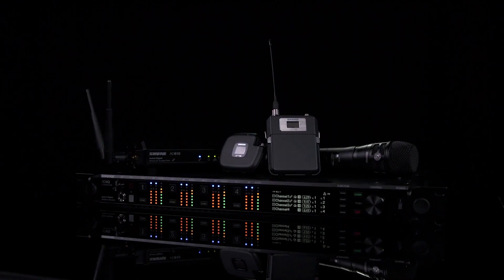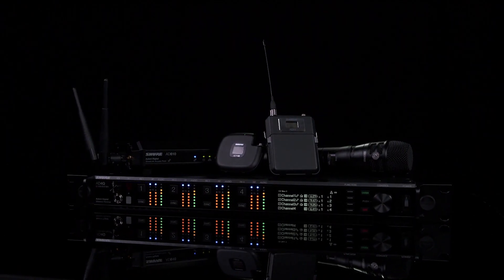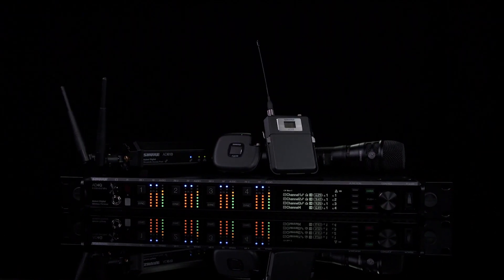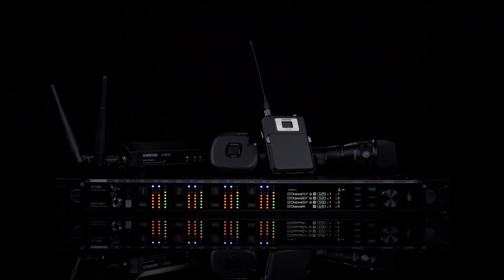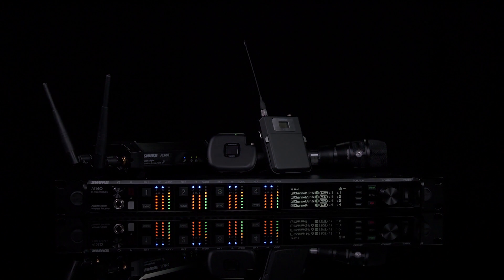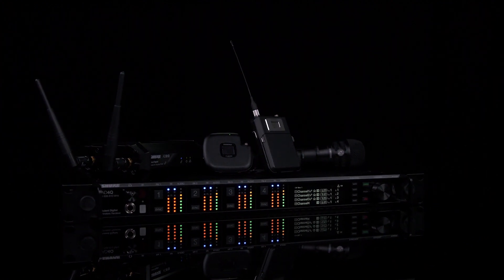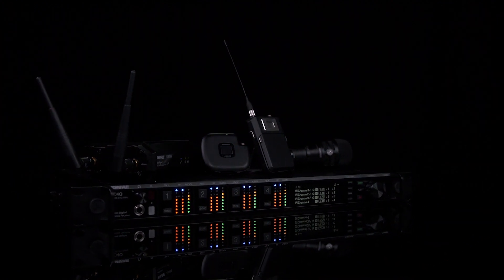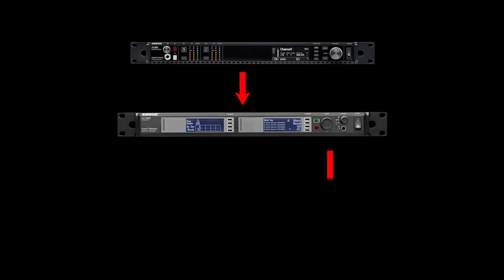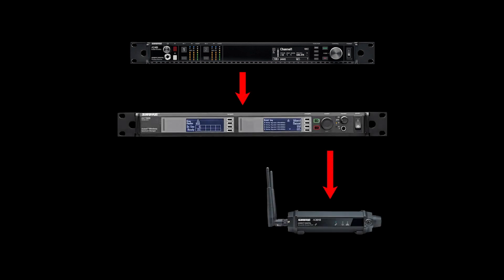To meet these challenges, Axiant Digital offers interference management, giving you more control over your RF environment. Receivers set to detect interference work with the Spectrum Manager and the ShowLink access point to deploy clear frequencies to your system if interference is present.